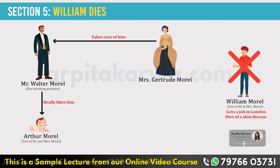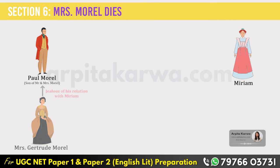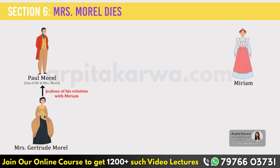After losing William, Mrs. Morrill didn't want to lose her other son Paul, who had developed pneumonia. She took care of him and Paul recovered. Paul then got into a relationship with a girl named Miriam. Paul's mother didn't like her son having a relationship with any girl and felt jealous. She also didn't like Miriam because she was from a poor family, and Mrs. Morrill was worried that Miriam might ruin Paul's life, believing he could do great things.